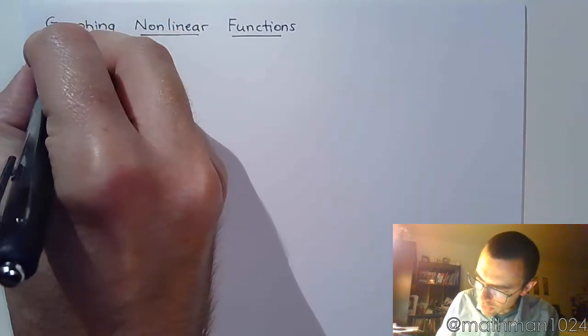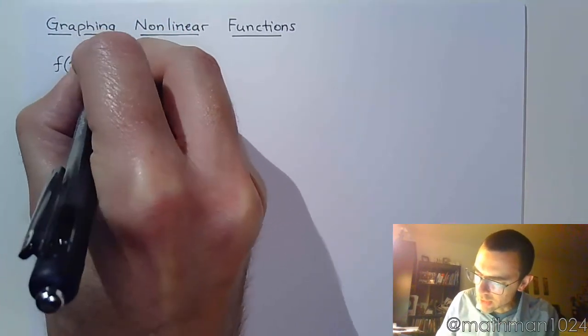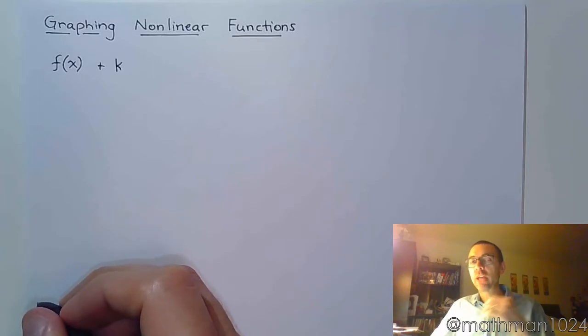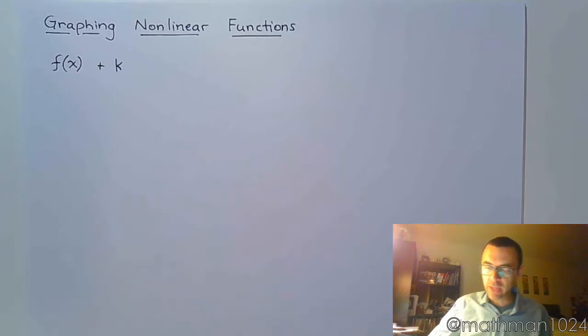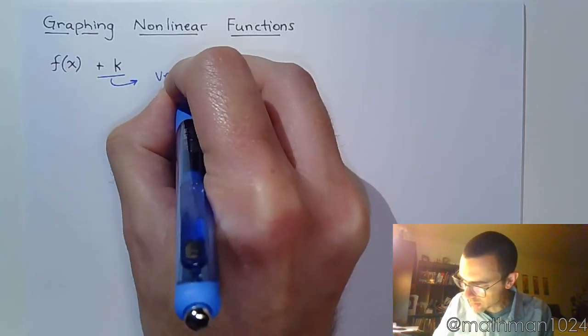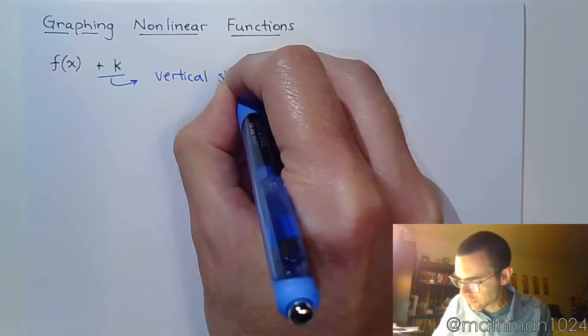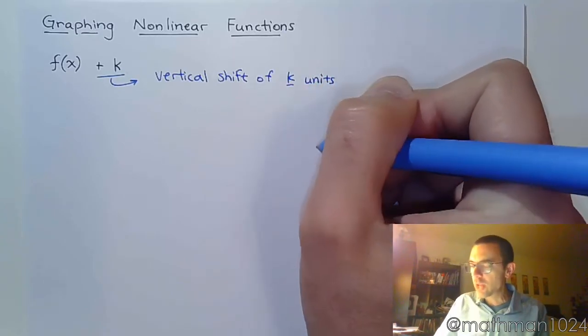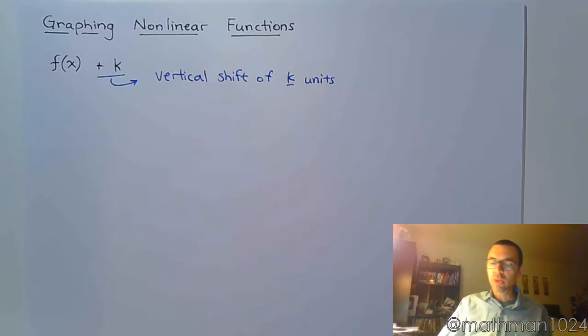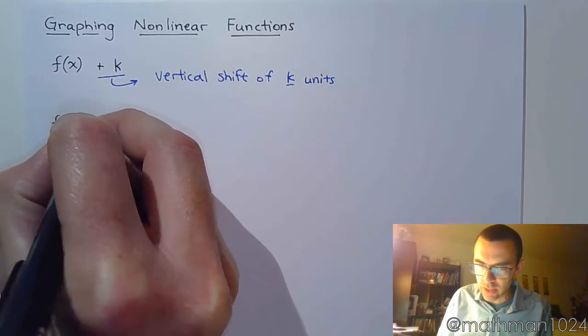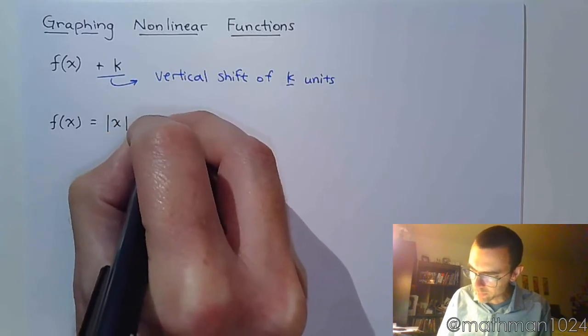So first things first, let's start off with this. When you see your function f(x) + k, so it's like you have your main function but there's something that's added outside of the function, something outside of the absolute value, outside of the square, outside of the cube root, whatever, this means that you have a vertical shift of k units. And so we're talking about this being outside the function. So let's do a couple of quick examples.